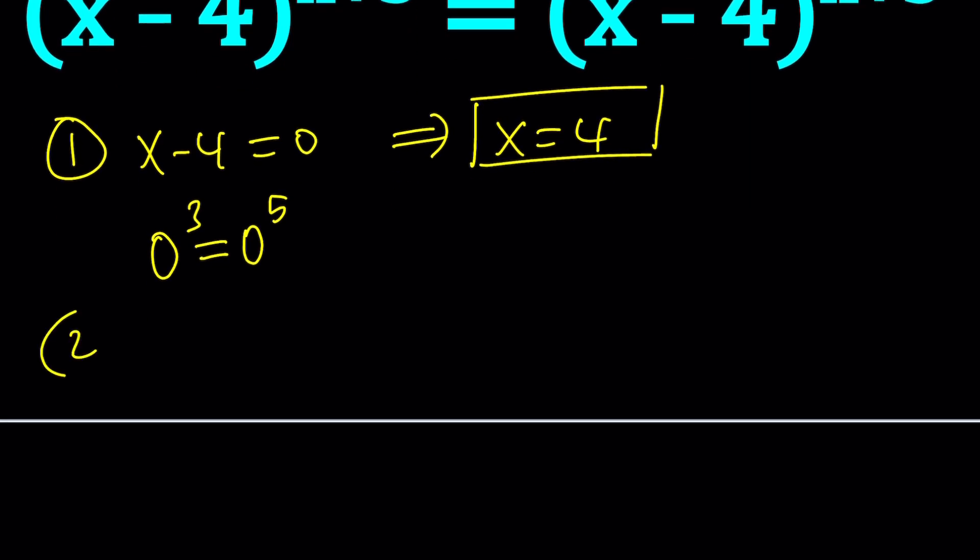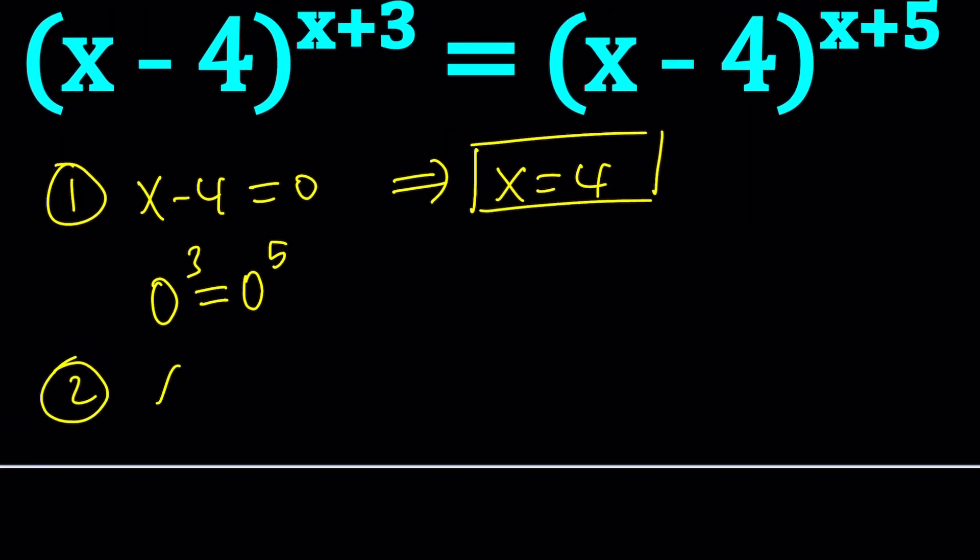And then the second case, the base being 1. If x minus 4 is equal to 1, that means x is equal to 5. But is that a valid solution? Yes, because if you replace x with 5, you get 1 to the power 8 and 1 to the power 10. And of course, they're equal. Good. x equals 5 is another valid solution. Wow. So far, we found two solutions.